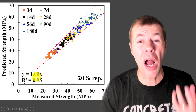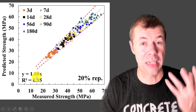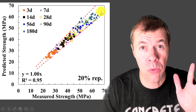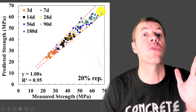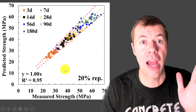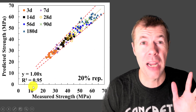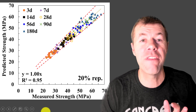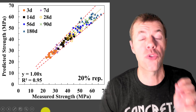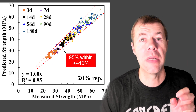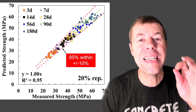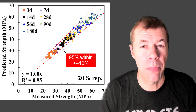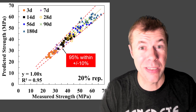As you can see, the equation is y equals x — that's a perfect match. That's the perfect dashed line right here in the middle. It perfectly matches on average. R-squared value is 0.95. These dashed lines here are the variations of the test method. That's with 20% fly ash replacement.